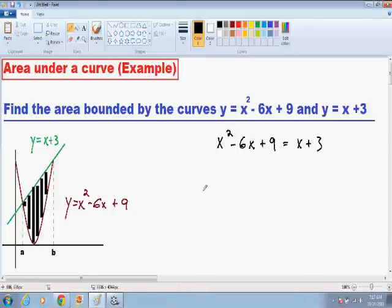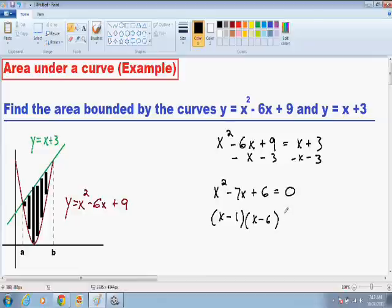So if I subtract x from both sides and I subtract 3 from both sides, I'm left with x squared minus 7x plus 6 and that all equals 0. And this is a quadratic equation that can be solved pretty easily. This factors into x minus 1 and x minus 6 equals 0.